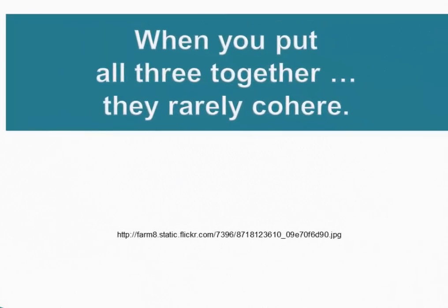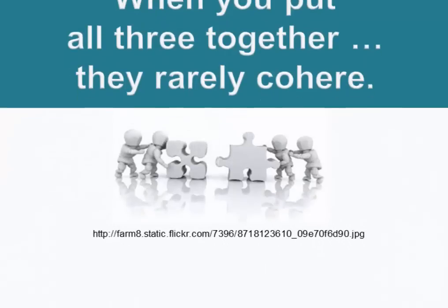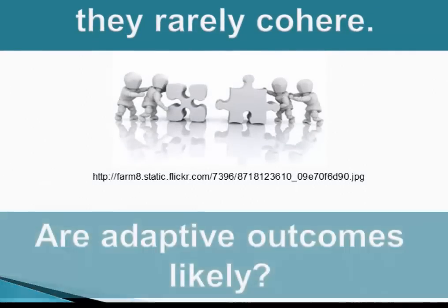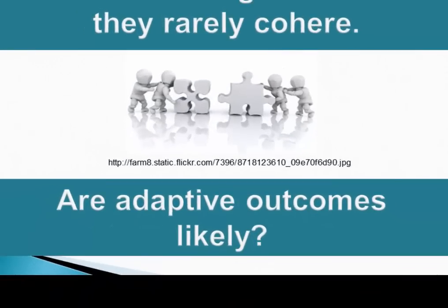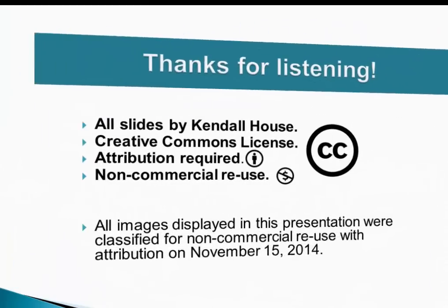When you put all three biases together, they rarely cohere. Some individuals do whatever everybody else does, others follow a prestige route, and others do what's easy — creating a mix of strategies. The question of whether we can expect adaptive outcomes to result from this mix will have to be addressed in a different presentation. Thank you for listening.